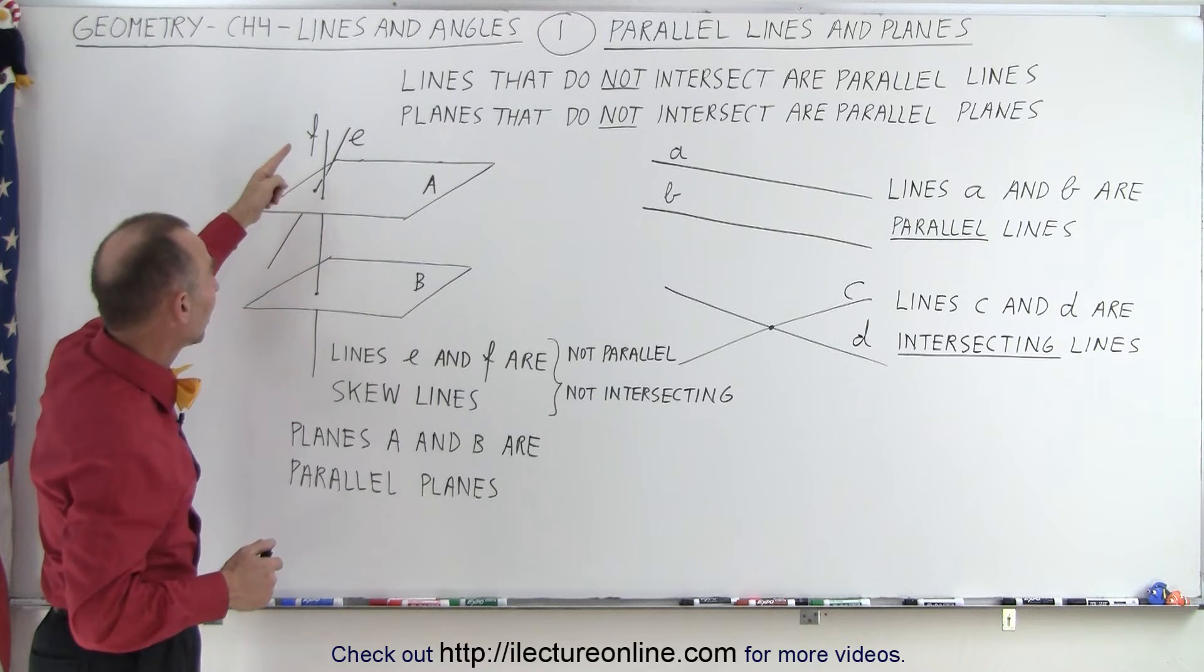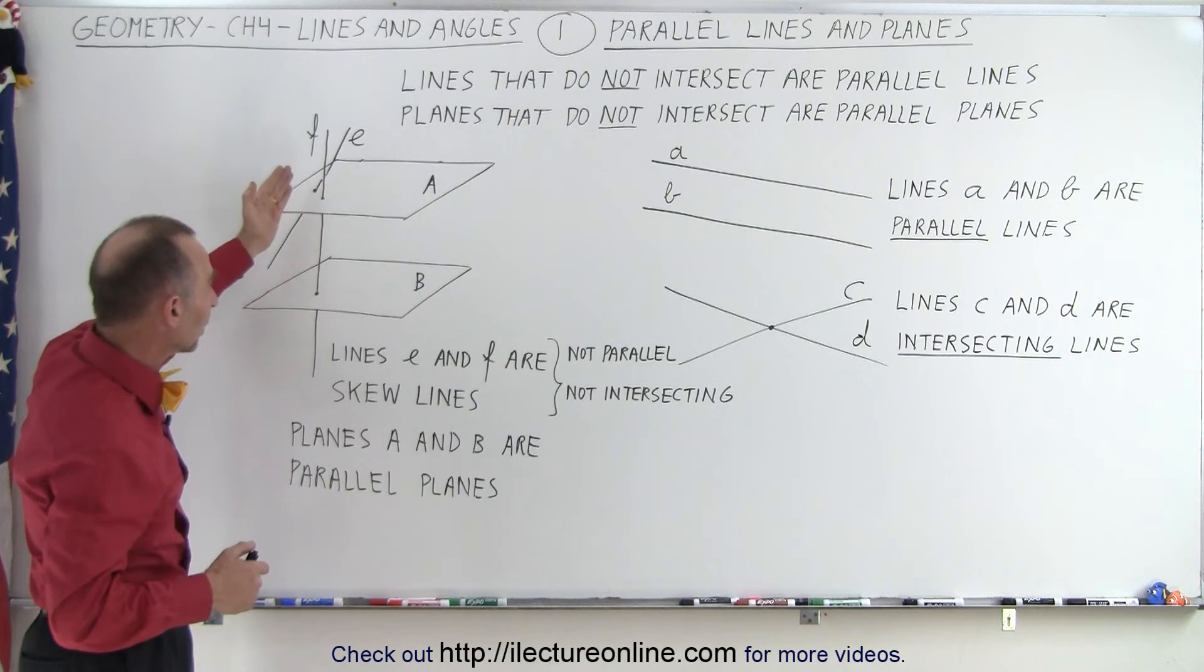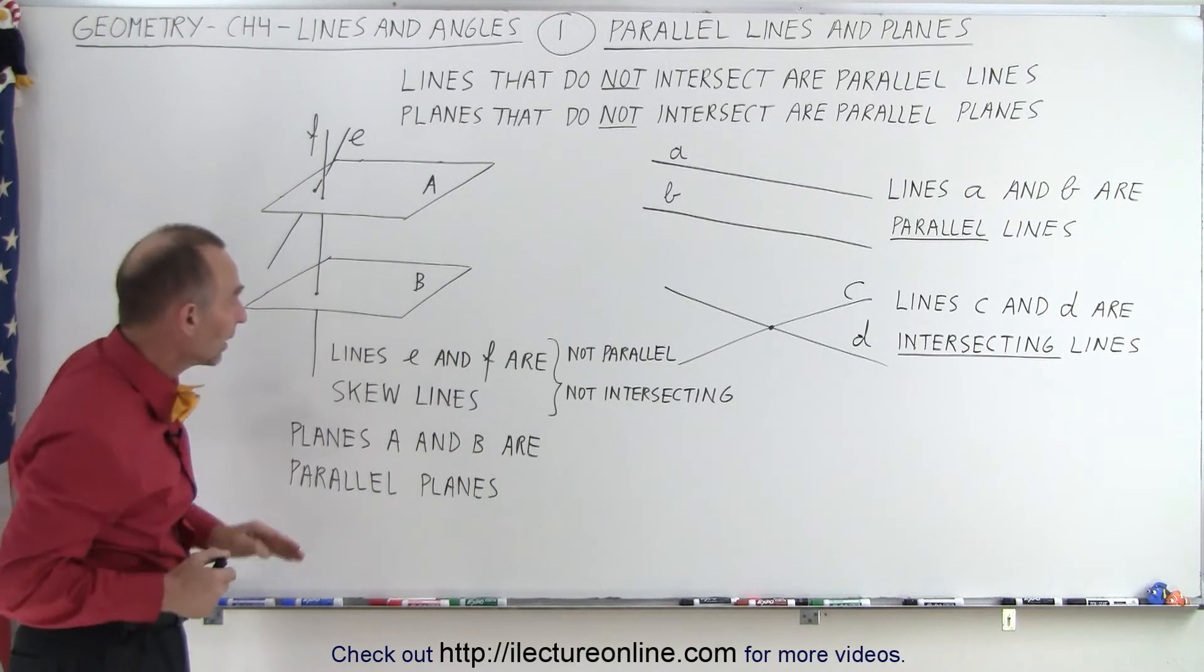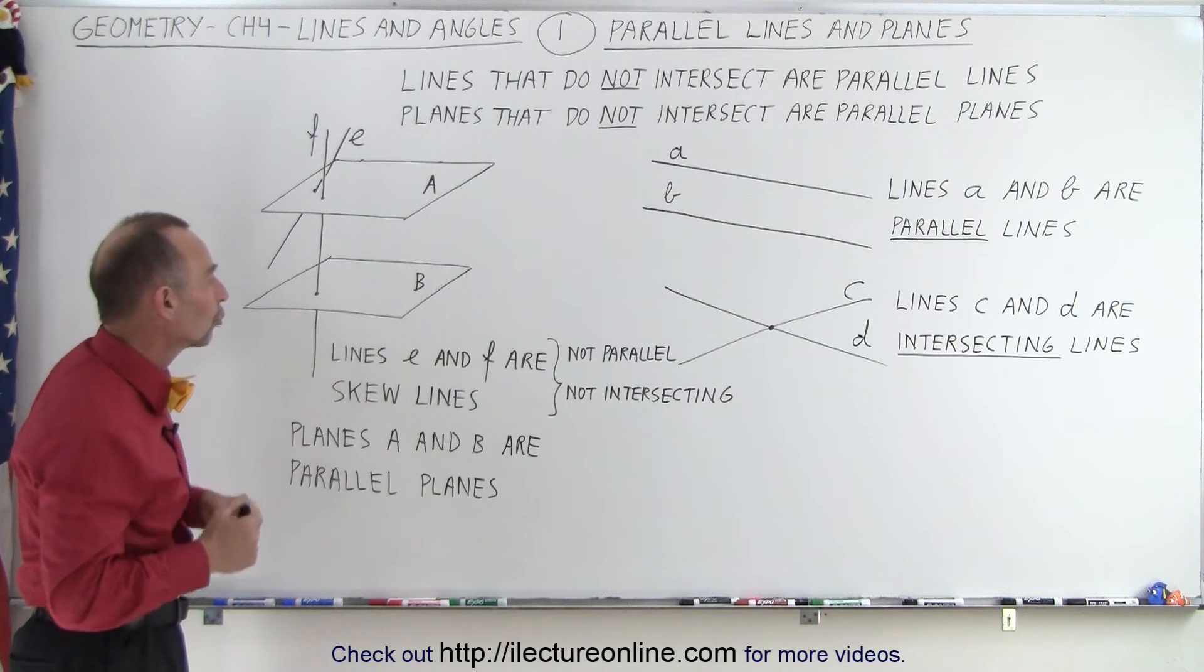So here's a good example of skew lines. They do not intersect. They're not parallel to one another. They're at different angles, so to speak. And therefore, we can say that those are skew lines.